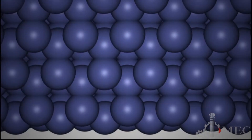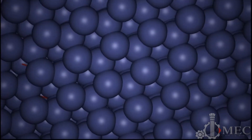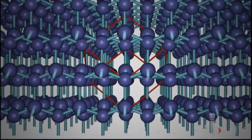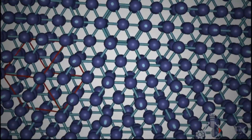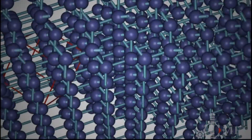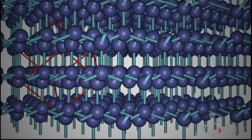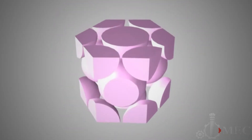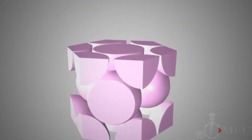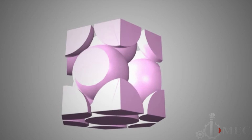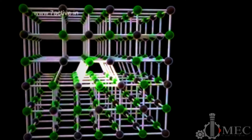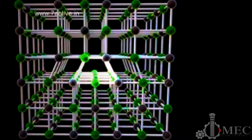We start with the introduction, we talk about bondings, and we guide our students on how to describe the unit cell and the structures, the types of structures. And in chapter four, we discuss the defects and how these defects affect the structure of metals.